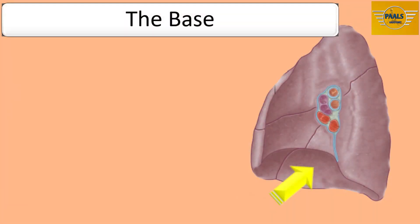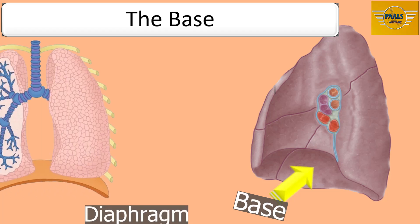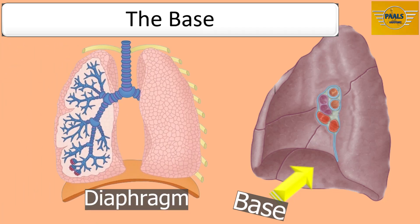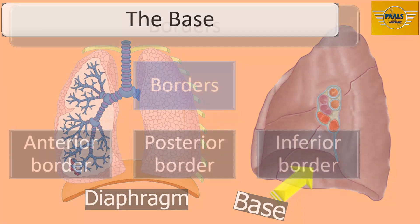The base is the lower part of the lung that relates with the diaphragm inferiorly, and as a result it is called the diaphragmatic surface. It has a semilunar concave curvature. The concavity of the base of the right lung is deeper than that of the left, due to the higher level of the liver underneath the right side of the diaphragm.